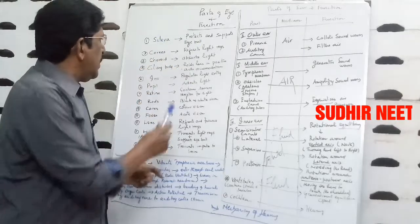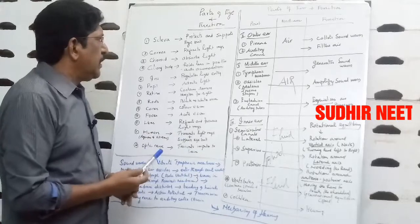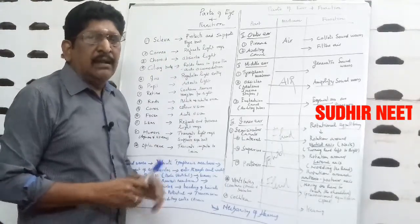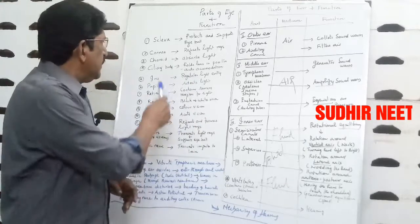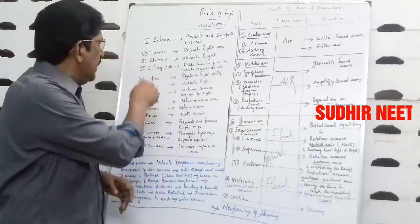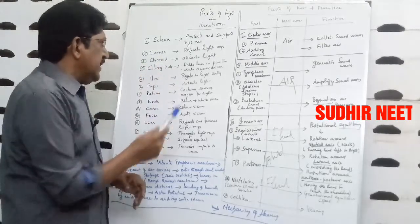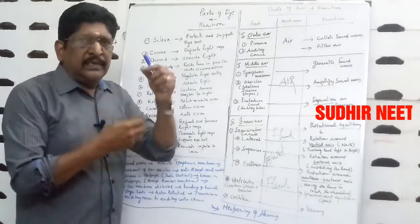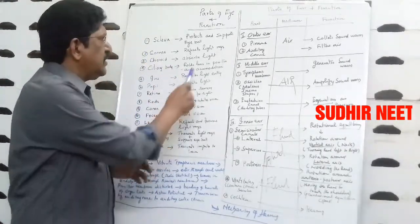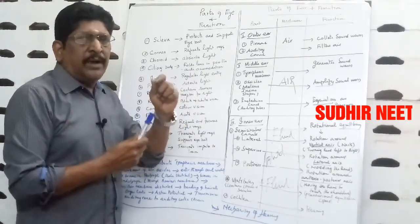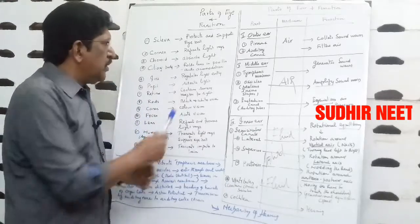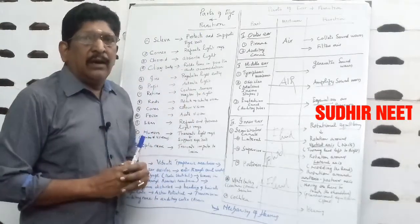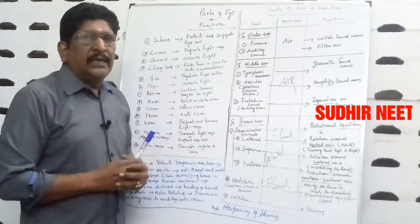The sclera is the outermost layer. The choroid is the middle layer, and its function is absorption of light — the choroid layer absorbs the light. Then coming to the ciliary body. The choroid in front becomes the ciliary body and iris. The function of the ciliary body is that it holds the lens in position. It also helps in accommodation of the eye — to see near objects and to see far objects.